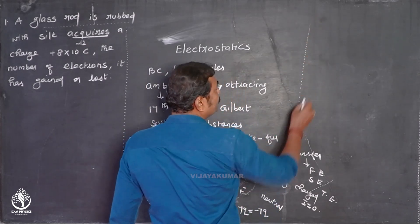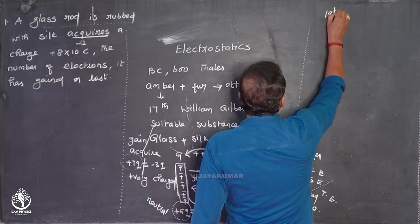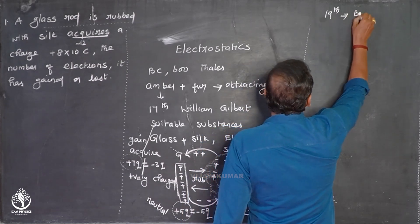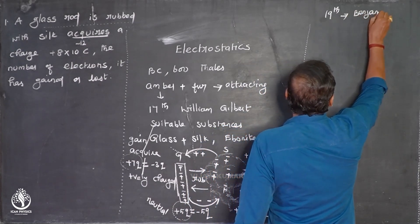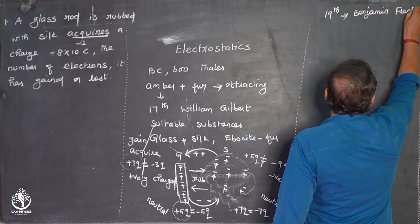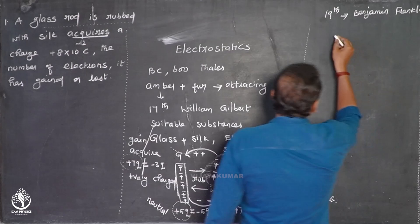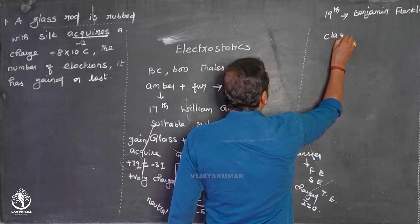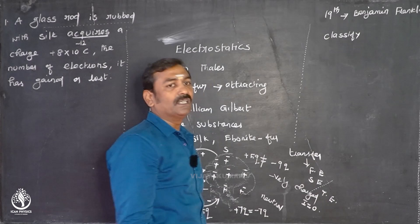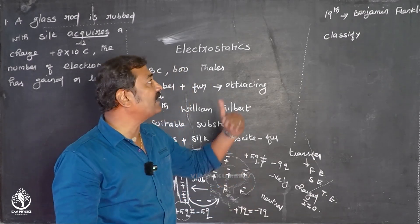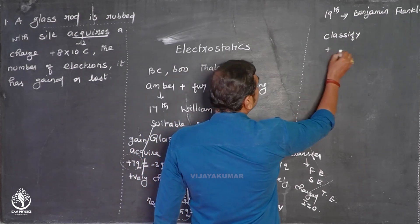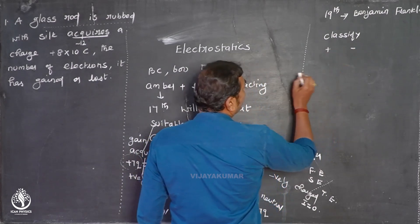During the 19th century, Benjamin Franklin classified charges into positive and negative. The classification of charges as positive and negative was done by Benjamin Franklin.